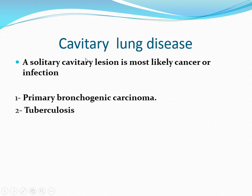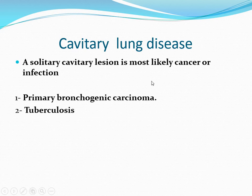Cavitary lung disease: a cavitary lesion has an irregular thick wall, usually with solid mural content. If the wall thickness of the cavitary lesion is equal to or less than 4 mm, it is usually benign. If more than 15 mm and spiculated, this suggests malignancy. If you have a solitary cavitary lesion, it is most likely due to cancer or infection — like primary bronchogenic carcinoma. Squamous cell carcinoma and adenocarcinoma can cavitate, but squamous cell carcinoma cavitates more frequently. Small cell carcinoma never cavitates.